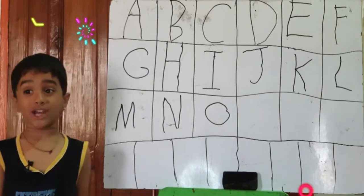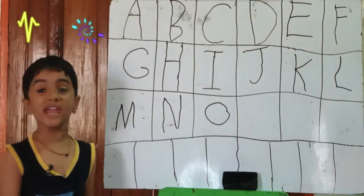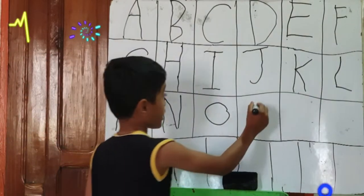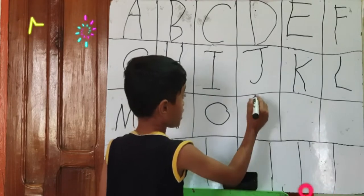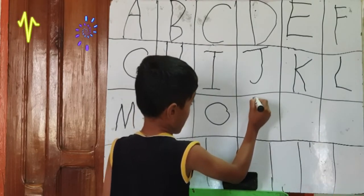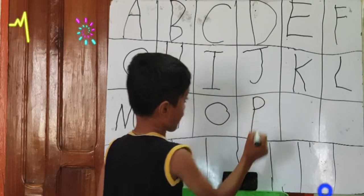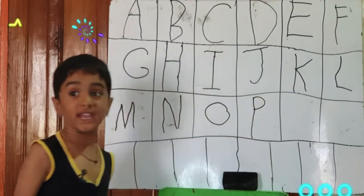Now we're learning P. One standing line and one half curve. P.